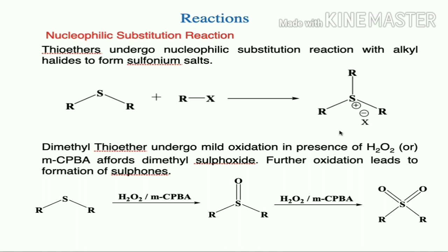We will see the importance of sulfonium salts in a later section of this lecture. Thioethers also undergo mild oxidation in the presence of hydrogen peroxide or meta-chloroperoxybenzoic acid (mCPBA) to give dimethyl sulfoxide. Further treatment with H₂O₂ or mCPBA leads to further oxidation giving sulfone.